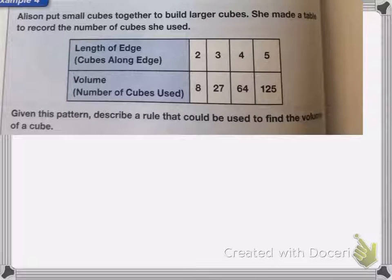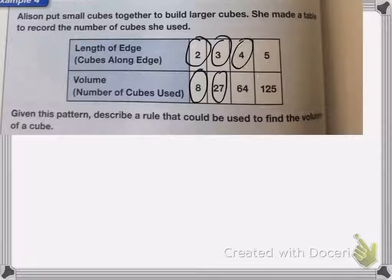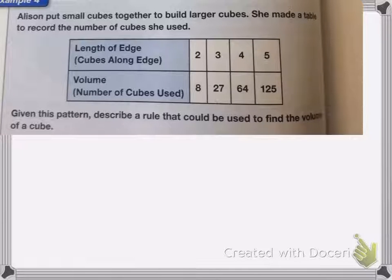All right, on this last problem, we have Allison put small cubes together to build larger cubes. She made a table to record the number of cubes she used. So if the length of one edge was two, her volume was 8, three was 27, four was 64, five was 125. So we need to figure out, given this pattern, describe a rule that could be used to find the volume of a cube specifically.